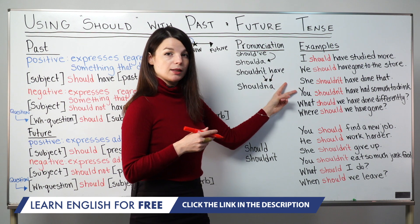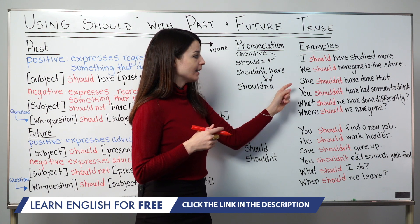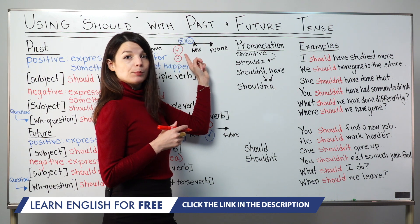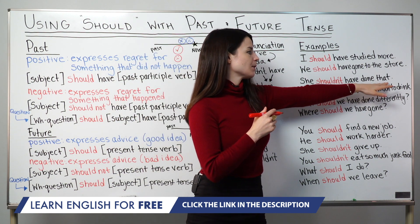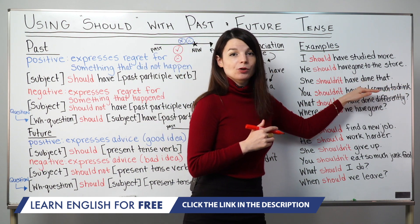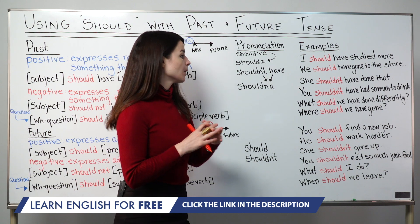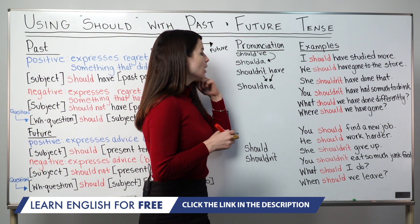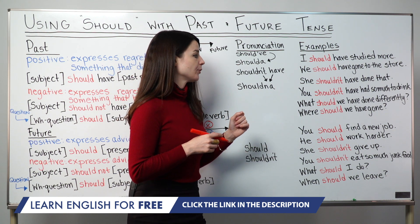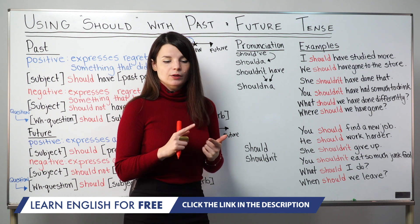Now two negative statements: She shouldn't have done that, and You shouldn't have had so much to drink. Both express regret for something that did happen. In both sentences, the speaker thinks the action was a bad thing or a bad choice. In everyday speech, we'd reduce these further: She shouldn'ta done that, and You shouldn'ta had so much to drink. These shouldna and shoulda pronunciations help you sound more natural.